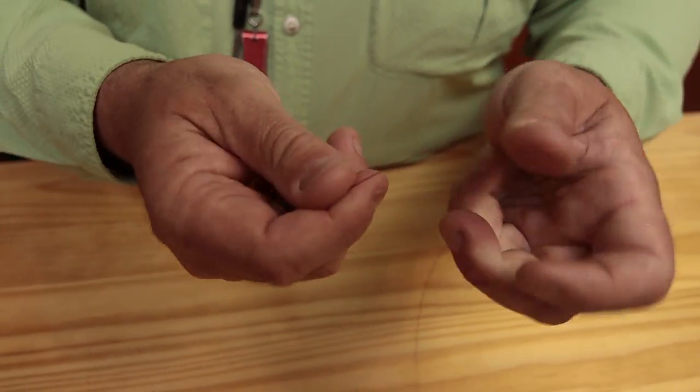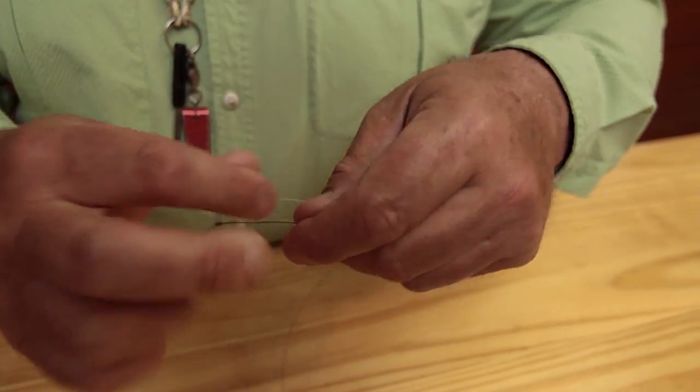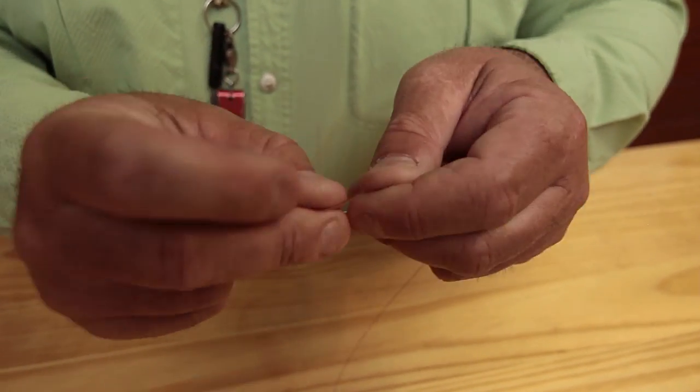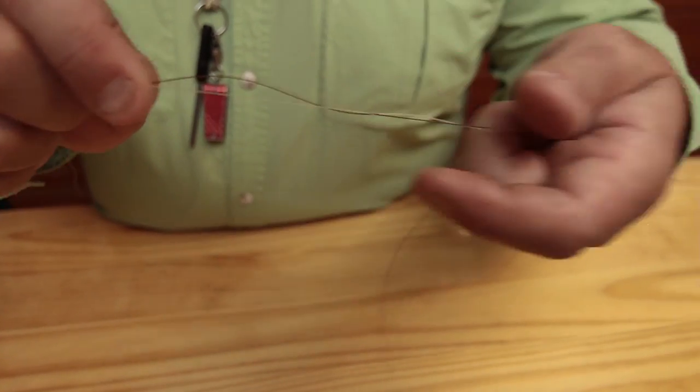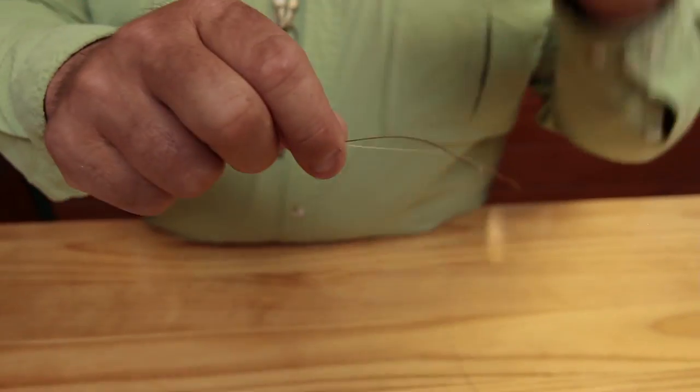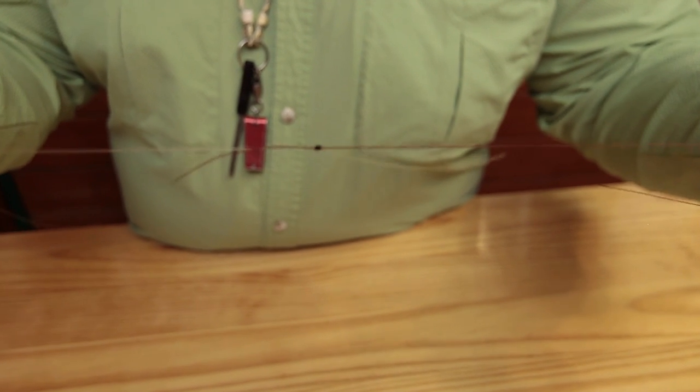And I'll do the same with the tippet end, or with the leader end. Now I have two knots. Most of the time, I'll moisten them a little bit, just so they don't burn. Now I slide those two together. Now I have a knot where the two knots are bumping up against each other. There's really no pinch point whatsoever, and it takes a lot to break that knot.